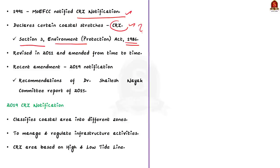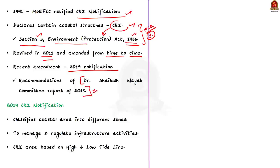Here is a potential prelims question: they may ask whether the coastal regulation zone notification has a statutory backing. The answer is yes — it has statutory backing because this notification is issued under Section 3 of the Environment Protection Act 1986. Note that the 1991 notification was revised in 2011 and amended from time to time. The most recent amendment was the 2019 notification, based on the recommendation of the Dr. Shailesh Nayak Committee Report 2015.